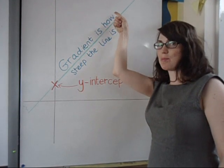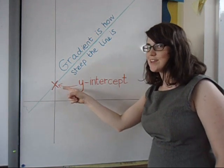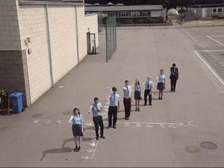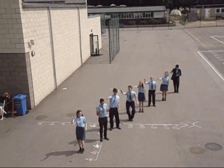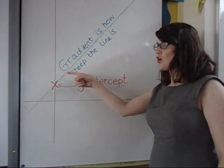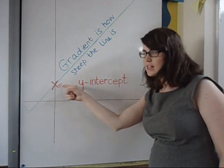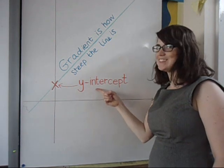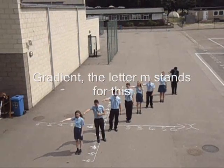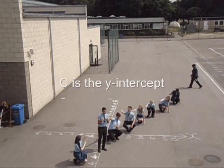Gradient is how steep the line is. Where it crosses is the Y-intercept. The letter M stands for gradient, and C is the Y-intercept.